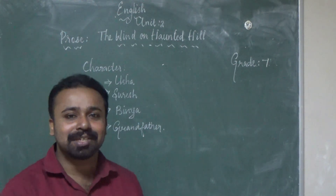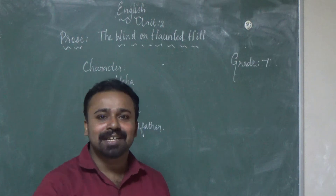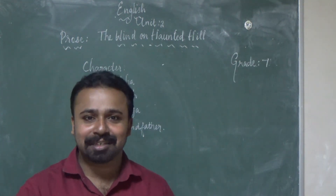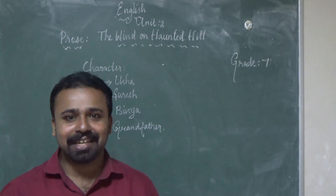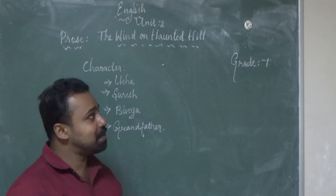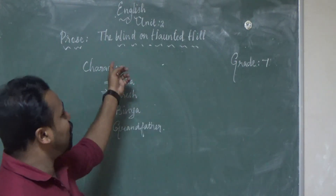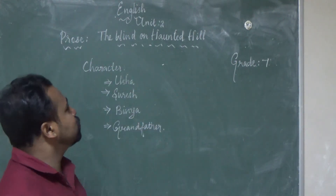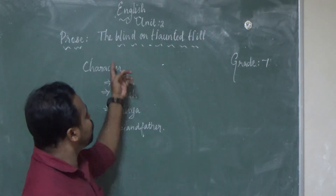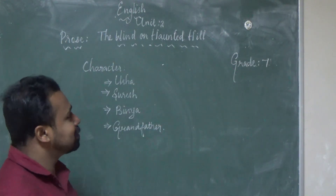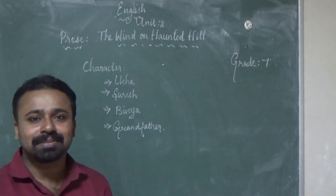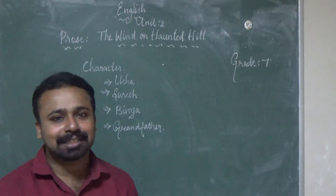The first unit is almost over — first prose and poem and the supplementary. It's already over, the exam also. Now we need to start the first prose. The title is 'The Wind on Hundred Hill.' That's the prose piece.